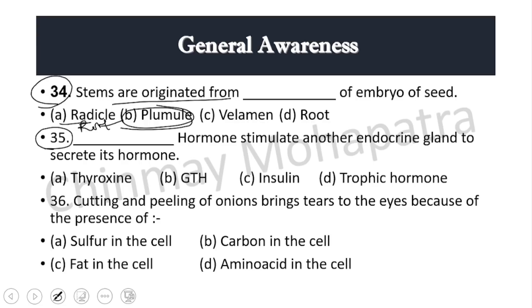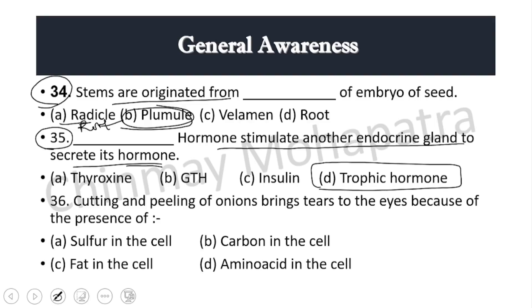Question 35: Which hormone stimulates another endocrine gland to secrete its hormone? Right answer: tropic hormone. Tropic hormones stimulate other endocrine glands to secrete their hormones.